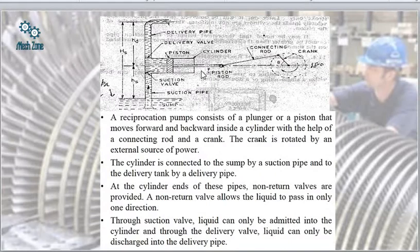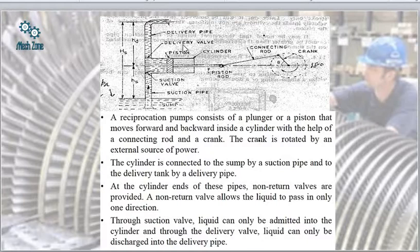The reciprocating pump consists of a connecting rod and a rotating crank, such that rotation of the crank causes the piston rod to perform a to-and-fro reciprocating motion. It consists of a plunger or piston that moves forward and backward inside a cylinder. The cylinder is connected to the sump by a suction pipe and to the delivery tank by a delivery pipe.